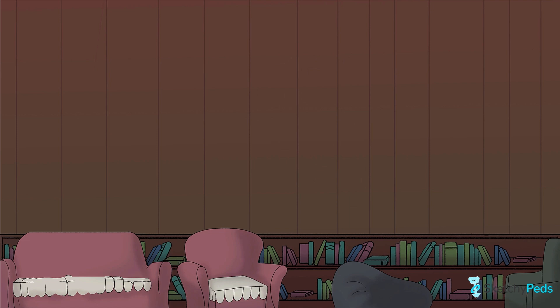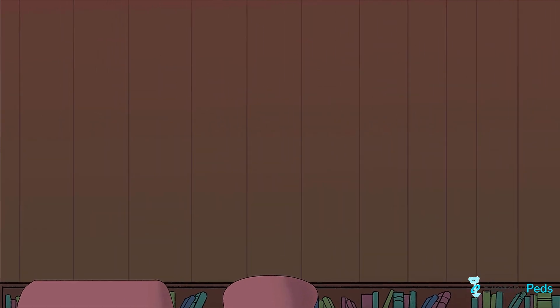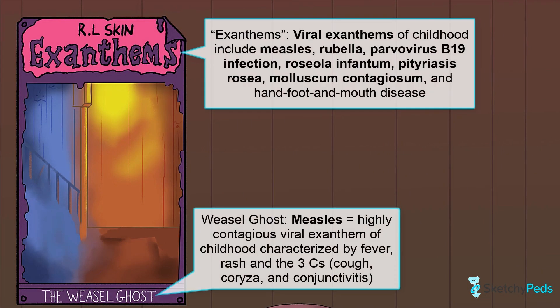Let's begin by briefly introducing these first four conditions, which will be depicted on four different book covers from the young adult horror novel series, Exanthems, by R.L. Skin. First up, measles, caused by measles virus infection, previously known as rubeola. It's highly contagious and characterized by fever, rash, and the three C's: cough, coryza, and conjunctivitis.